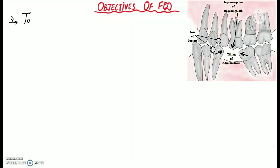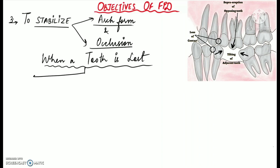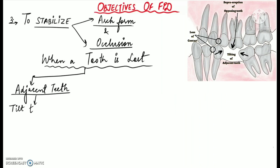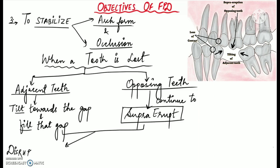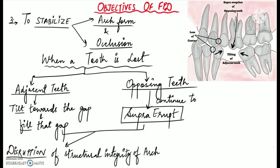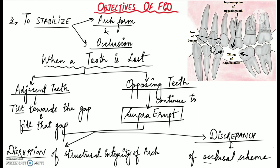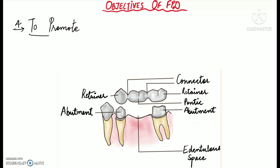The next objective of FPD is to stabilize the arch form and occlusion. When a tooth is lost, teeth on either side of the edentulous space tend to tilt towards the gap, and the opposing teeth continue to erupt into the gap, as we can see in this picture. Such movement of teeth results in disruption of the structural integrity of the dental arch and also results in discrepancy of the occlusal scheme. Therefore, it is essential to replace the lost tooth as early as possible, which can be achieved with a fixed partial denture. Another objective is to promote good oral hygiene.